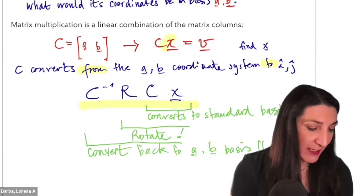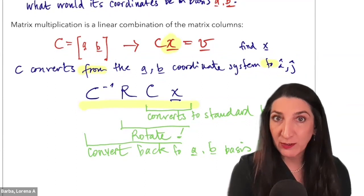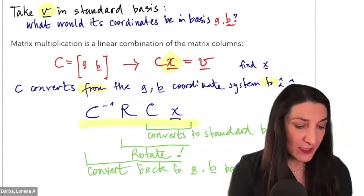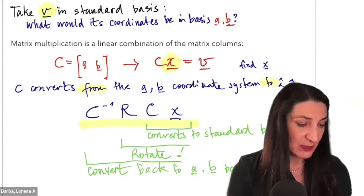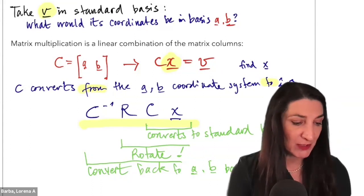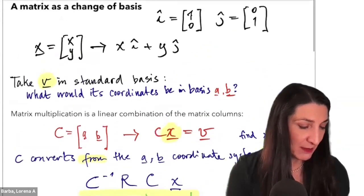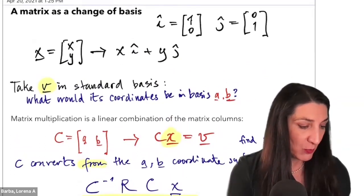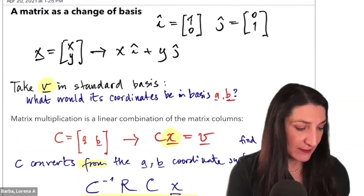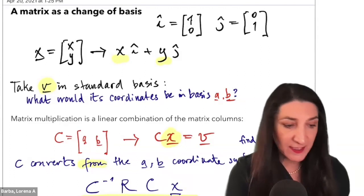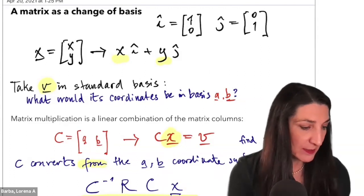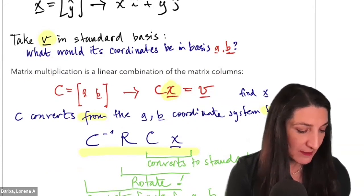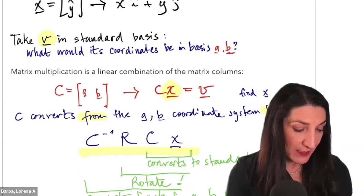What is the vector x that, multiplied with matrix C, gives us vector v? That is the same question — because matrix multiplication is a linear combination of the matrix columns. So what are the coordinates, what are the scalars in a linear combination of a and b that give me the vector v?